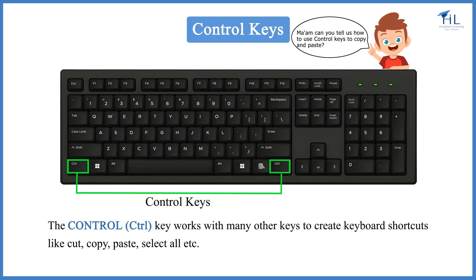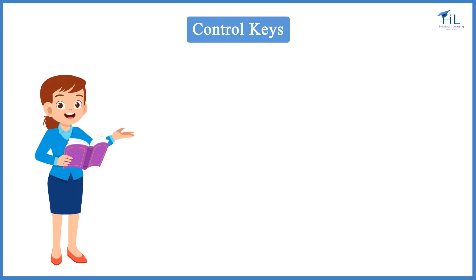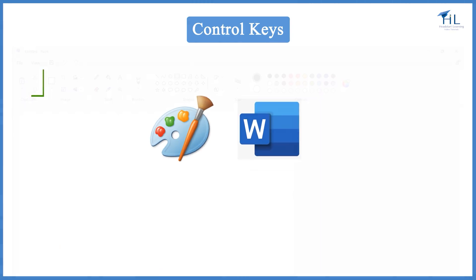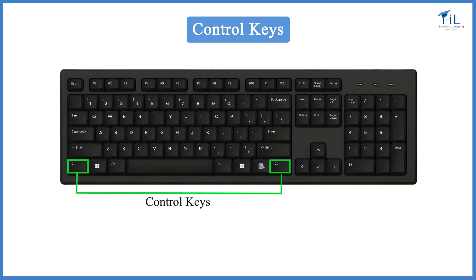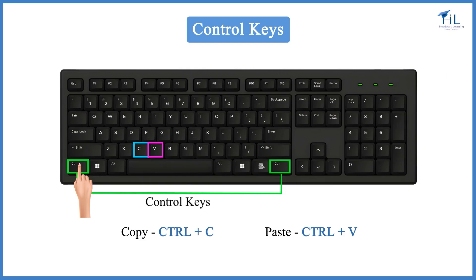Ma'am, can you tell us how to use control keys to copy and paste? Yes, sure. You all must have used copy-paste while making drawings on a computer or while doing your assignments. Most programs like MS Paint, MS Word, etc. have a copy-paste menu option in the toolbar. But instead of using the menu option, you can use a keyboard shortcut. The shortcut for copy is Ctrl+C, and the shortcut for paste is Ctrl+V. The control key needs to be pressed before you tap any other key and should be held down while you press the second key.